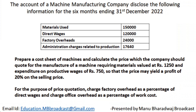The accounts of a machine manufacturing company disclose the following information for 6 months ending 31st December 2022: materials used 1,50,000; direct wages 1,20,000; factory overheads 24,000; administration expenses related to production 17,640. Prepare a cost sheet of machines and calculate the price the company should quote for manufacturing a machine requiring materials valued at Rs. 1,250 and expenditure on productive wages of Rs. 750, so that the price may yield a profit of 20% on the selling price. For the purpose of price quotation, charge factory overhead as a percentage of direct wages and charge office overhead as a percentage of work cost.